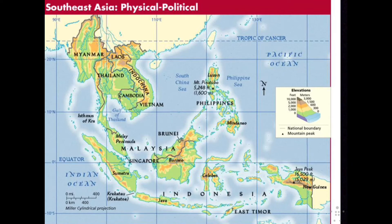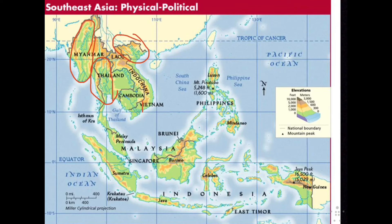Rivers: the people of Southeast Asia rely on waterways for transportation, communication, and food. Major mainland rivers include the Irrawaddy in the west, the Chao Phraya in the center, the Red River — also known as the Hong — in the northeast, and then the Mekong, which forms the border between Laos and Thailand along the Indochina region.